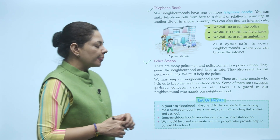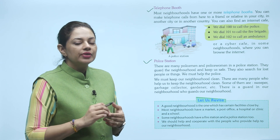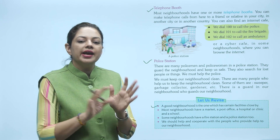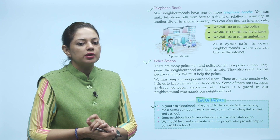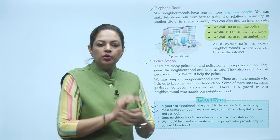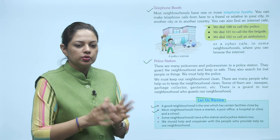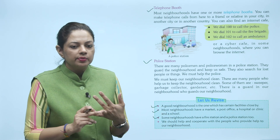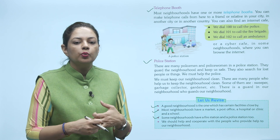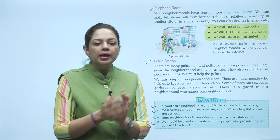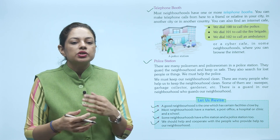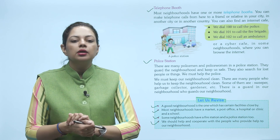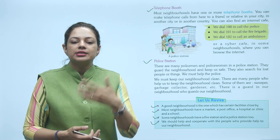Let us revise the chapter. A good neighborhood is the one which has certain facilities close by — jaise fire station, hospital, school aas paas ho. Most neighborhoods have a market, a post office, a hospital and clinic, and a school. Some neighborhoods have a fire station and a police station too. We should help and cooperate with the people who provide services to our neighborhood — hameein hamesha aise logon ki help karni chahiye jo hameein surakshit rakhte hain, aur unke saath cooperate karna chahiye. Toh bacchon aapko ye chapter samajh aaya hoga — ek baar phir se read karenge aur exercise ki practice khud se karenge.